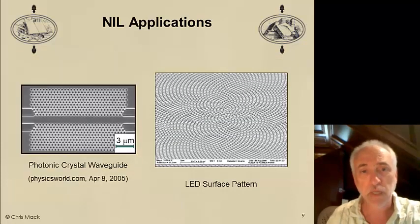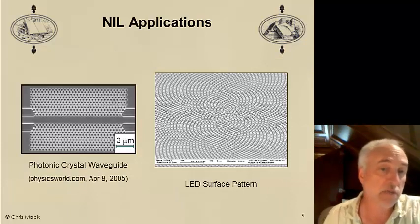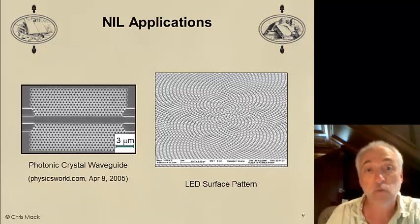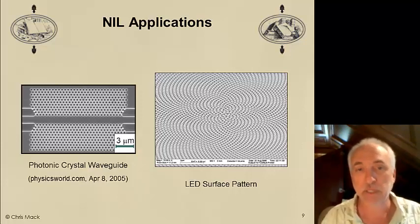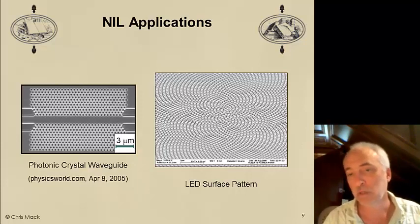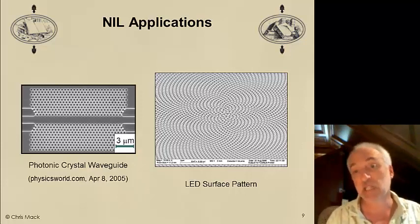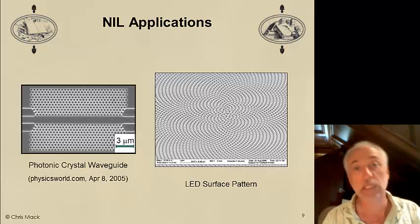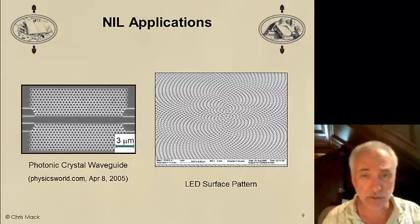People are also using nano imprint for patterning photonic crystal waveguides, where a textured or patterned material like glass has unique properties depending on how it's patterned. People are using it to pattern the surface of a wafer when making light-emitting diodes to maximize the amount of light that can escape out of the semiconductor and into the air. There are all kinds of very interesting applications for nanotextured surfaces.